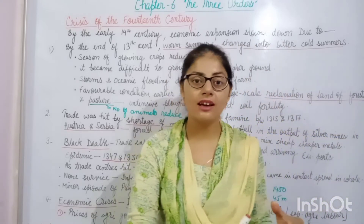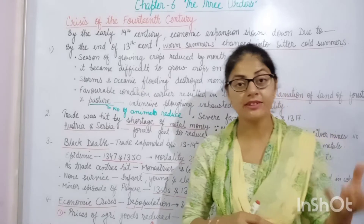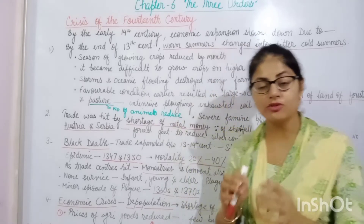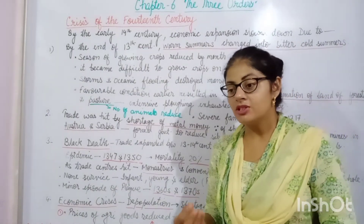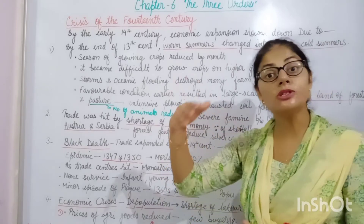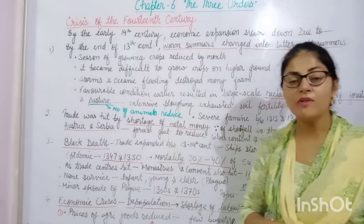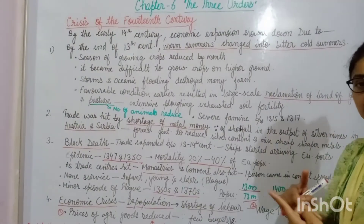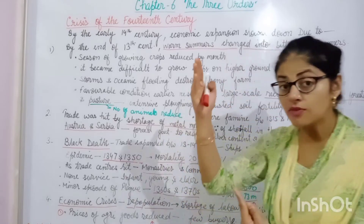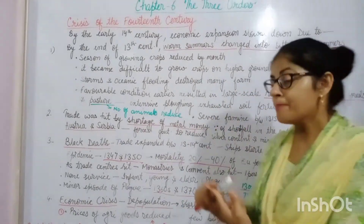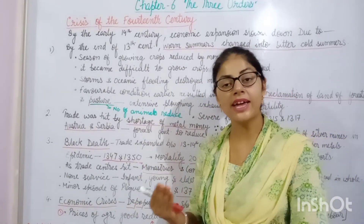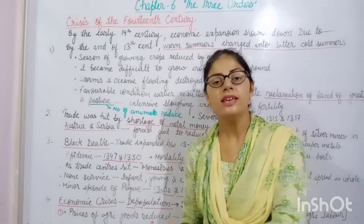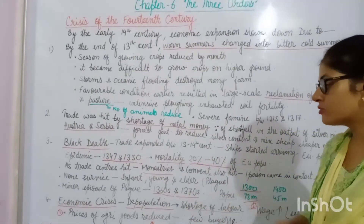The wages of agricultural laborers especially increased because there were very few laborers and demand was high during the agricultural season. The wage became two to three times what it was before the 14th century. Additionally, the prices of agricultural crops also reduced because the population reduced, demand reduced, and as a result prices fell. These two factors together led to the economic crisis in Europe.